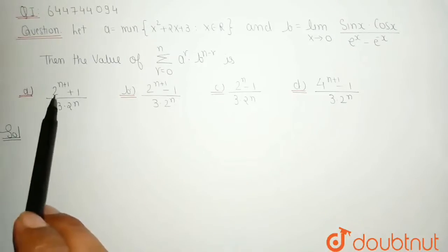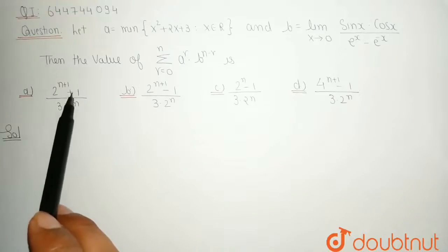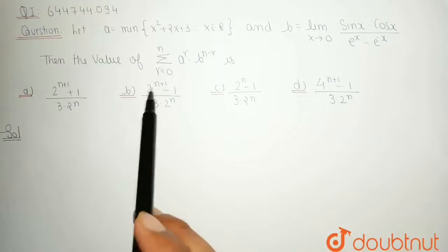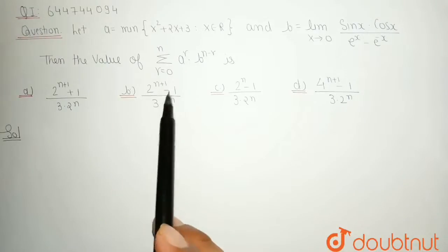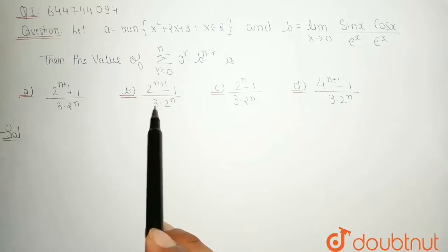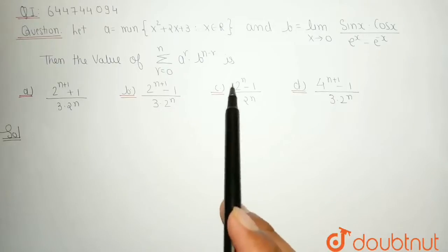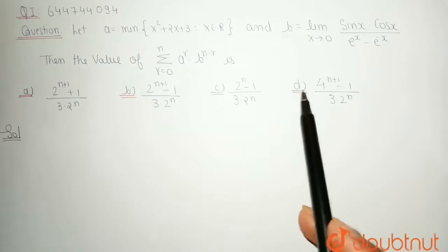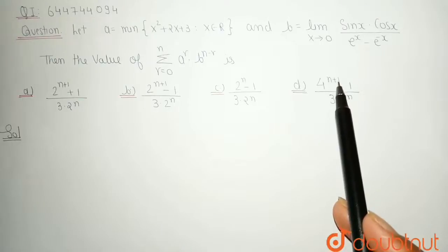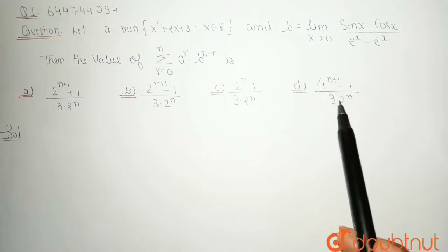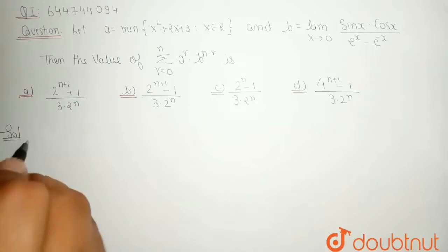Option A is (2^(n+1) + 1) / (3 · 2^n). Option B is (2^(n+1) − 1) / (3 · 2^n). Option C is (2^n − 1) / (3 · 2^n). Option D is (4^(n+1) − 1) / (3 · 2^n).